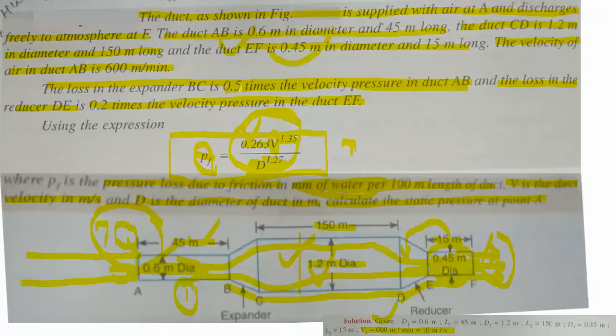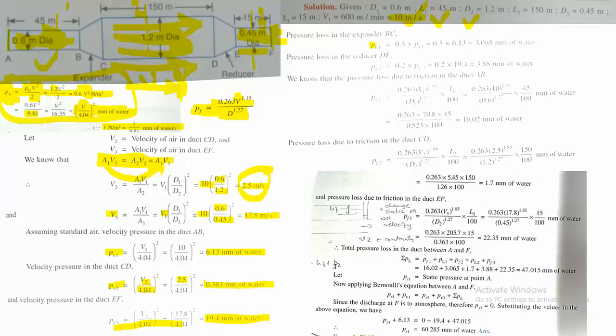The pressure loss in section BC is 0.5 times the velocity pressure head in AB. So loss in BC = 0.5 × PV1 = 0.5 × 6.13 = 3.065 mm of water. The BC section pressure loss is now completed.